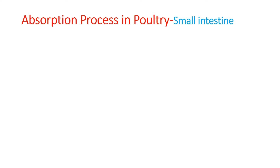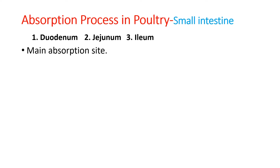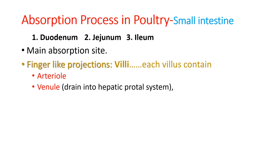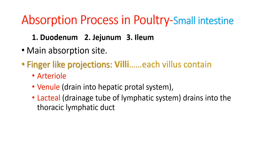The small intestine has three parts — duodenum, jejunum, and ileum — and is the main absorption site in poultry birds, as in other monogastric species. It is folded into manifolds that increase its surface area, and has finger-like projections known as villi. Each villus contains arterioles and venoles that drain into the hepatic portal system, and lacteals that drain into the thoracic lymphatic duct. In poultry, the lymphatic system is not well developed, and the majority of nutrients are absorbed through the hepatic portal system.